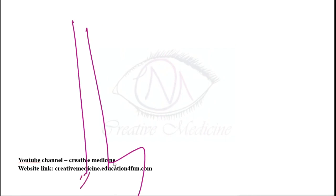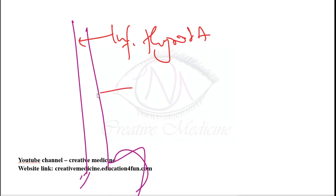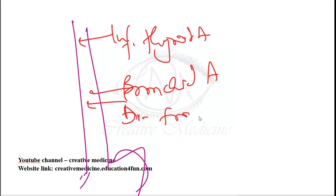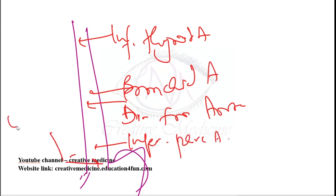Blood supply of the esophagus: in the lower neck, supplied by inferior thyroid artery; in the thorax behind the trachea, by bronchial artery; at T4, by direct branches from the aorta; near the diaphragm, by inferior phrenic artery; at the gastroesophageal junction, by the left gastric artery. The arteries penetrate the muscularis at right angles.